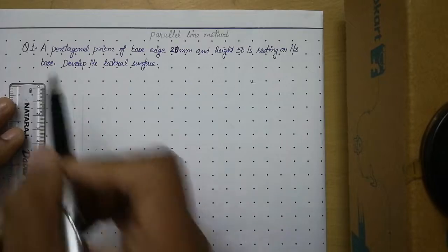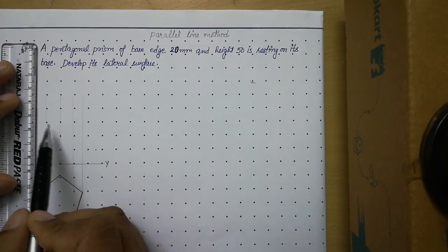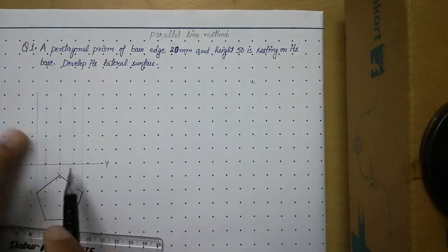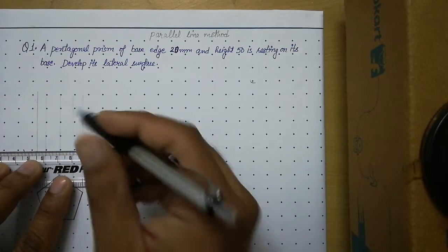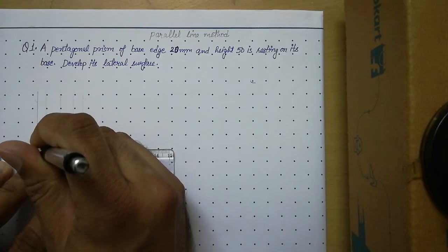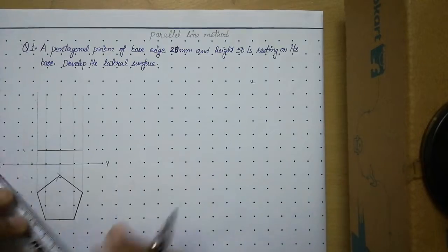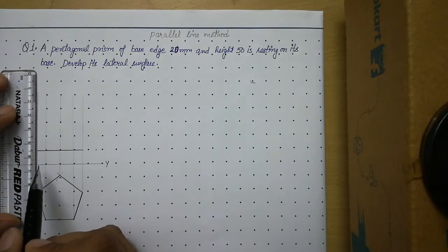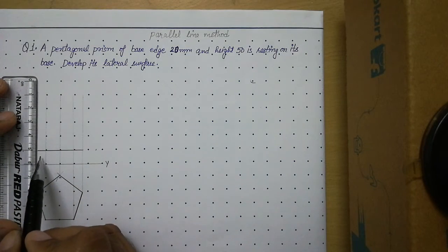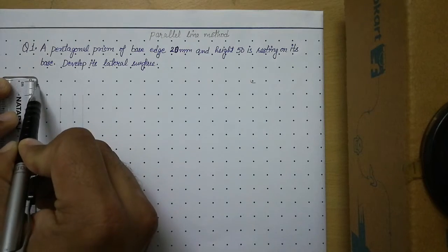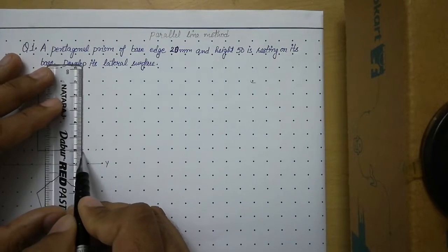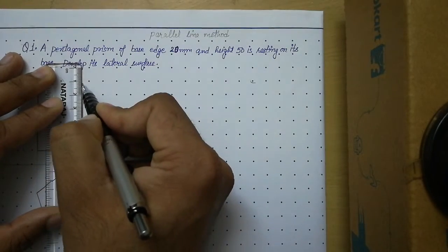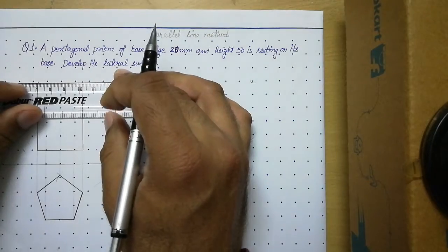Make sure all the lines are vertical. Now we use these projectors to draw the front view of the prism. Leave one row gap and draw a thick line at the bottom — this is the base of the prism. Then draw the height to 50 mm. Line your scale on the generator and mark 50 mm on both sides, then join these two points at the top to get the top face of the prism.